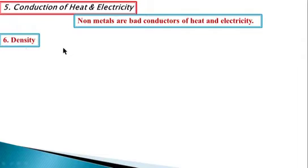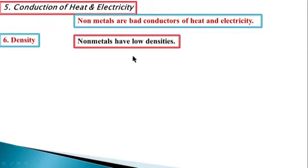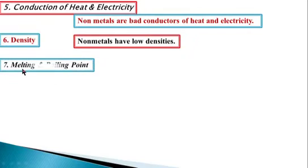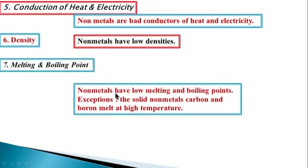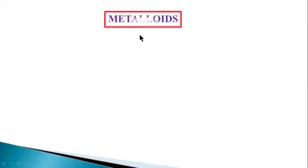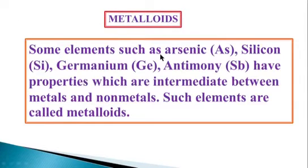Sixth, density — nonmetals have low densities. Seventh, melting and boiling point — nonmetals have low melting and boiling points, except solid nonmetals carbon and boron, which melt at high temperatures. Metalloids: Some elements such as arsenic (As), silicon (Si), germanium (Ge), and antimony (Sb) have properties which are intermediate between metals and nonmetals. Such elements are called metalloids.